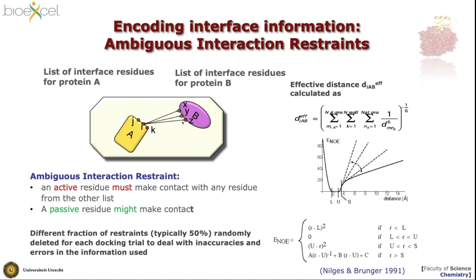By default, we randomly delete 50% of those distance restraints for each docking trial, because the data might not be perfect — bioinformatic predictions can have many false positives. This means different models originate from different combinations of restraints. In this way you sometimes discard bad data, but you also sometimes discard good data. It is then up to the scoring function at the end to distinguish good from bad solutions.